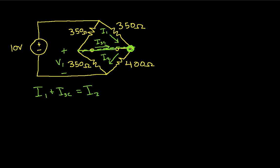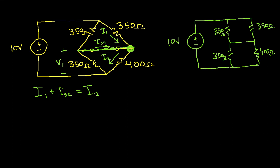So I can redraw this circuit to make it clear what I want to do as follows. I have 10 volts and I have then a 350 ohm resistor. Another 350 ohm resistor. These guys are connected. 350 ohms. 400 ohms. And these guys are connected. So what I'm going to do is I'm going to take this resistor and this resistor, put them in parallel and get an equivalent resistance. I'll then take this resistor and this resistor, put those in parallel and get an equivalent resistance. And from that I'll have a voltage divider which gives me V1.